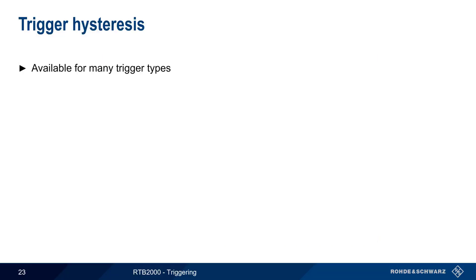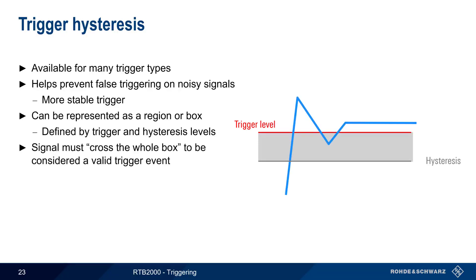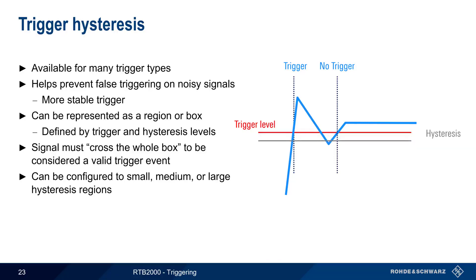Trigger hysteresis is available for many trigger types. Hysteresis is used to prevent false triggering on noisy signals and provide a more stable trigger. Hysteresis can be represented as a region or box that's defined by the trigger and hysteresis levels. In order to be considered a valid trigger, the signal must cross the whole box in one direction. In this example, the first crossing of the trigger level is a valid trigger event, but the second crossing is not. On the RTB, hysteresis can be configured as small, medium, or large regions. If we changed our region in this example to small, the second trigger crossing now becomes a valid trigger event.